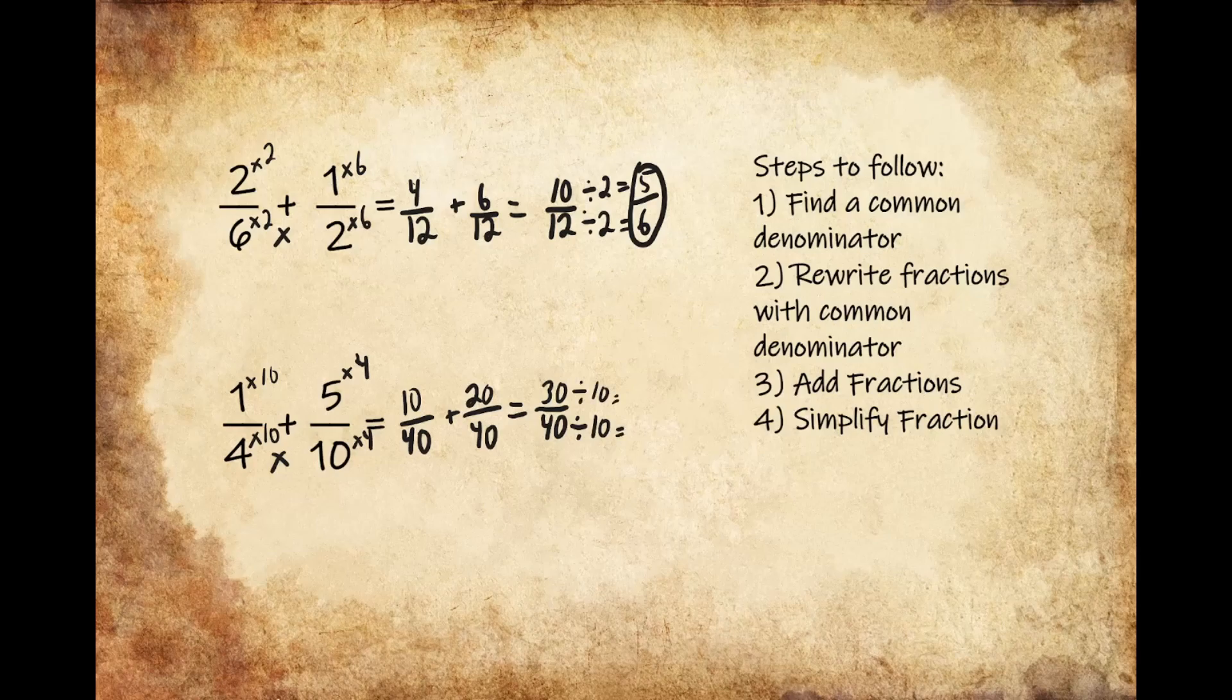Let's go ahead and divide both 30 and 40 by 10 to rewrite this fraction in its lowest possible terms. 40 divided by 10 gives us 4, and 30 divided by 10 gives us 3 for an answer of 3/4.